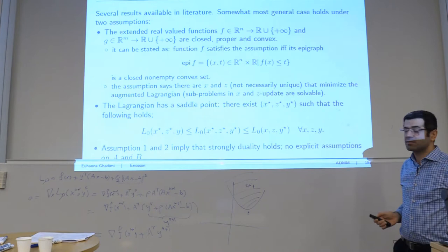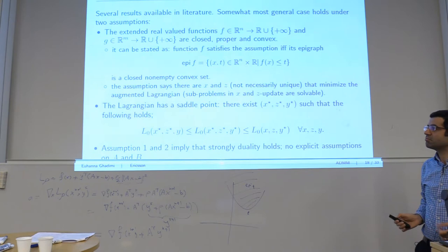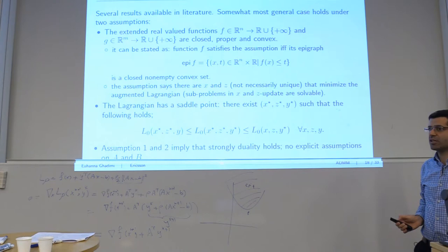What it means is basically that the epigraph of the function, which is a super graph—if you have the graph of the function, the area above the function is called the epigraph of F—then this set is convex and closed. So that is much milder assumption compared to the convex continuity and the normal assumptions that you have in the gradient case, the sub-gradient methods.